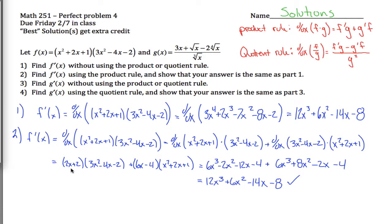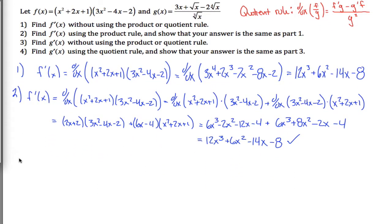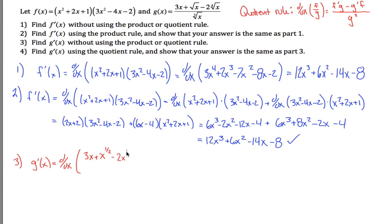Now let's do that again, except instead of finding the derivative of f twice, let's find the derivative of g twice. G prime of x means take the derivative of g, which in this case is 3x plus the square root of x, which I'll write as x to the 1/2 power, all over the cube root of x. I'm using exponent notation instead of radical notation because it works out nicer when applying the power rule. The fourth root of x is x to the 1/4, and the cube root of x is x to the 1/3.